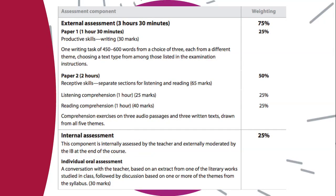The external exam is three hours and thirty minutes. Paper 1 is an hour and thirty minutes — you'll make a choice from three options, each from a different theme, and choose a text type from among those listed in the examination instructions. So you might write an email, a letter, or a set of instructions — it all depends. This is where we'll go over the different types of writing, the different templates you can use, and you'll be practicing them throughout the course.